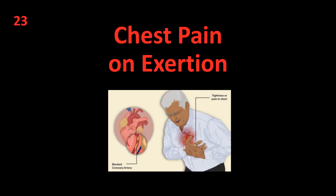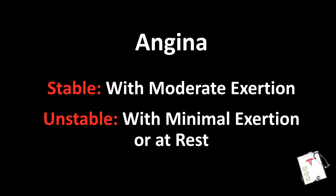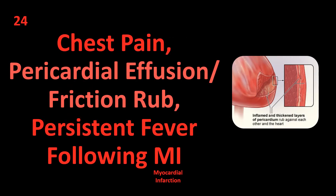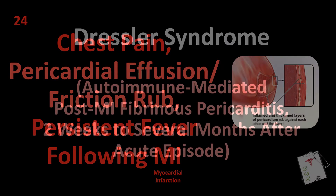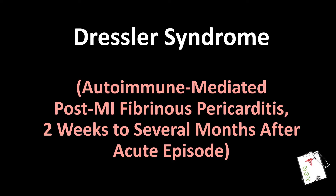Number 23 (also presented as 24-25): Chest pain on exertion. Answer: Angina — stable with moderate exertion; unstable with minimal exertion or at rest. Number 25: Chest pain, pericardial effusion, friction rub, persistent fever following MI. Answer: Dressler syndrome — autoimmune-mediated post-MI fibrinous pericarditis, occurring two weeks to several months after acute episode.